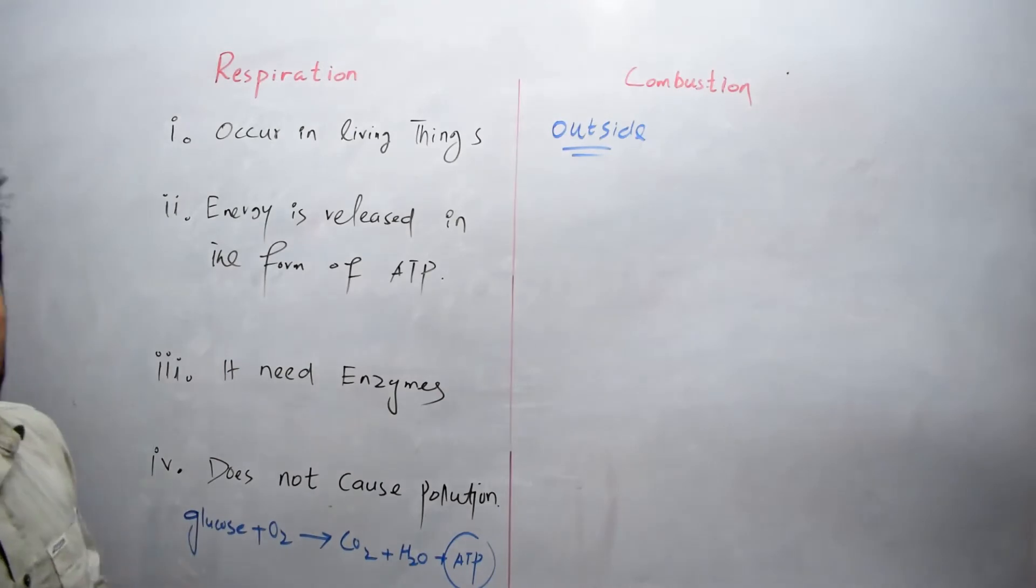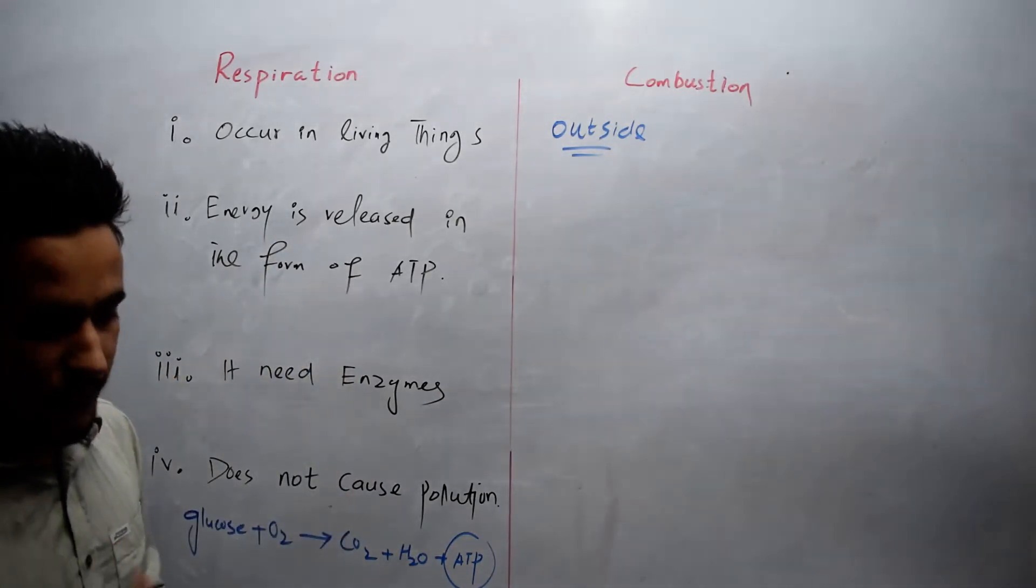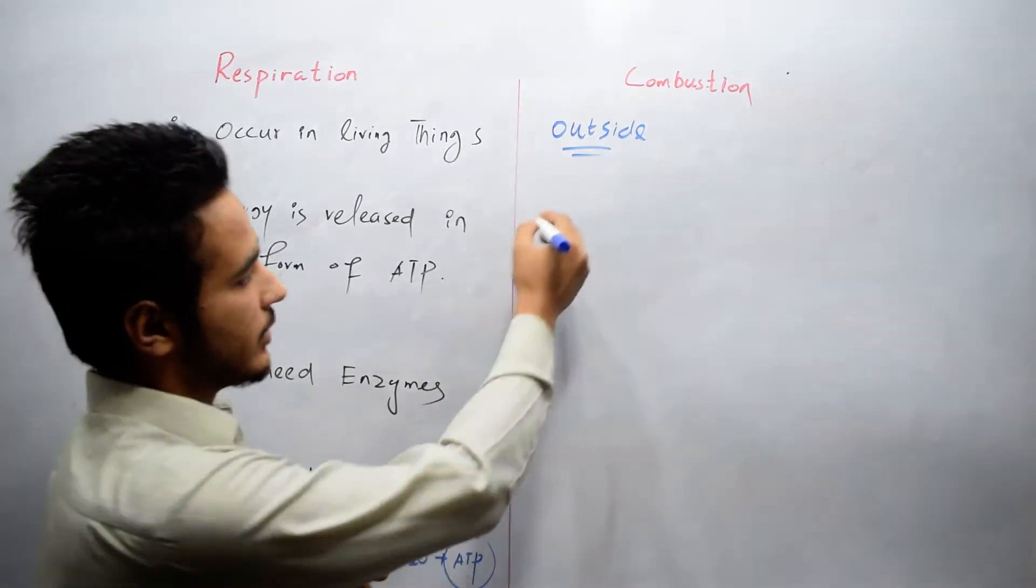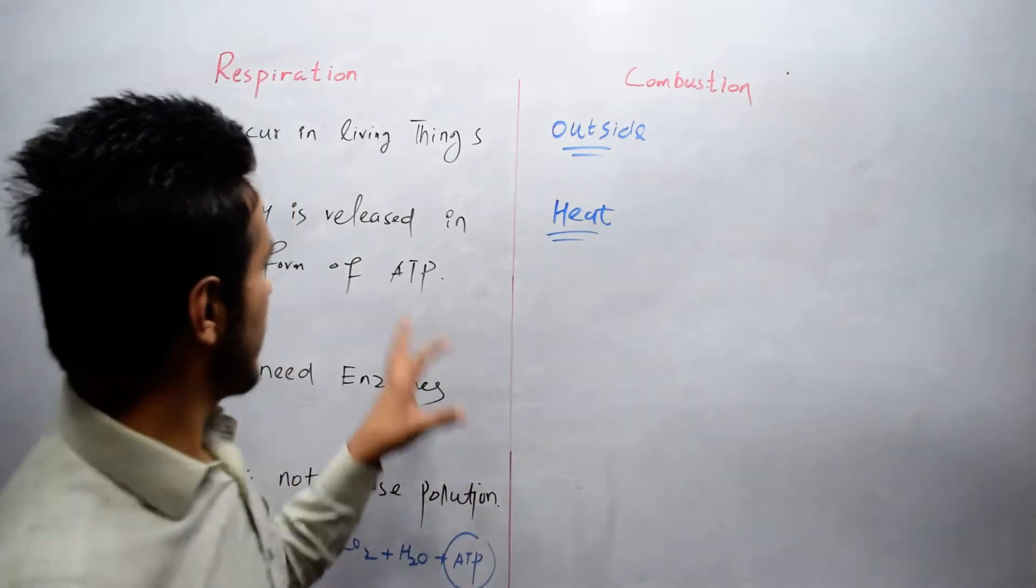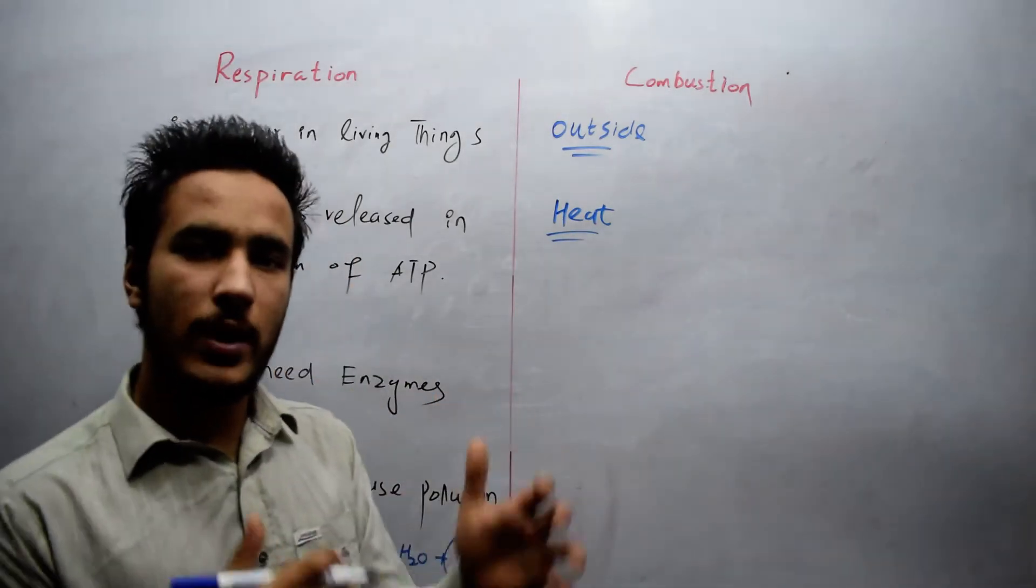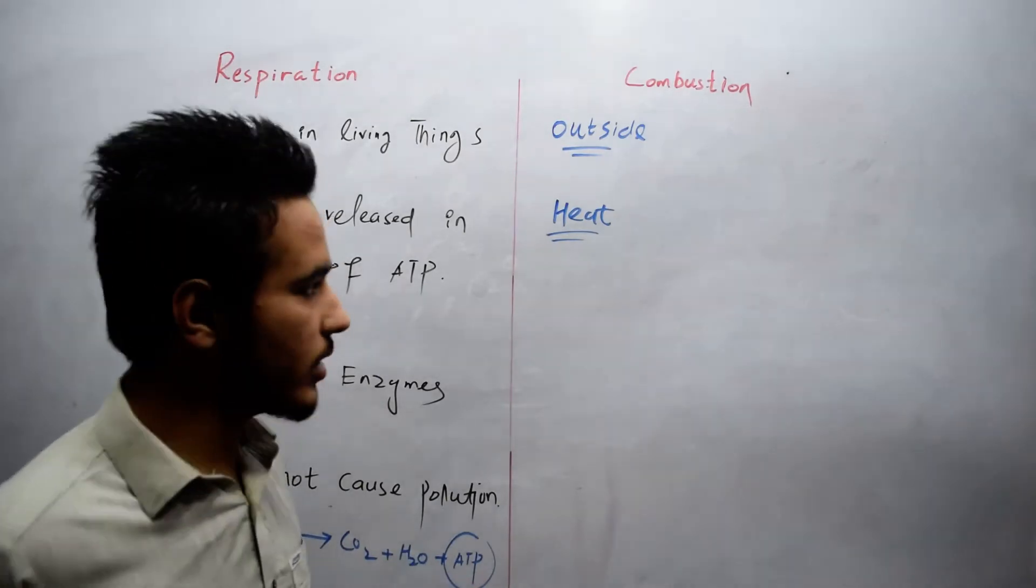We get energy in the form of ATP. While in combustion, we get energy as a whole in the form of heat. In respiration, energy is released stepwise, where glucose is converted into energy stepwise, while in combustion the energy is converted at once into heat.